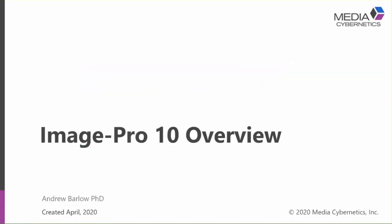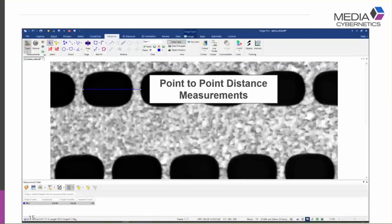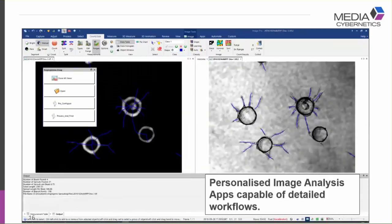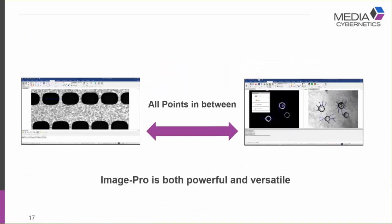Now let's move on to a quick overview of Image Pro 10 — really a sneak preview of what we'll cover in upcoming webinars. If you're new, the first question is: what is Image Pro for? There are many answers: it can be for fairly simple but important functionality such as point-to-point distance measurements, or you can use it to make personalized image analysis apps capable of detailed workflows — for example, a fibrin gel bead assay app with its own user interface and a complex angiogenesis analysis workflow.